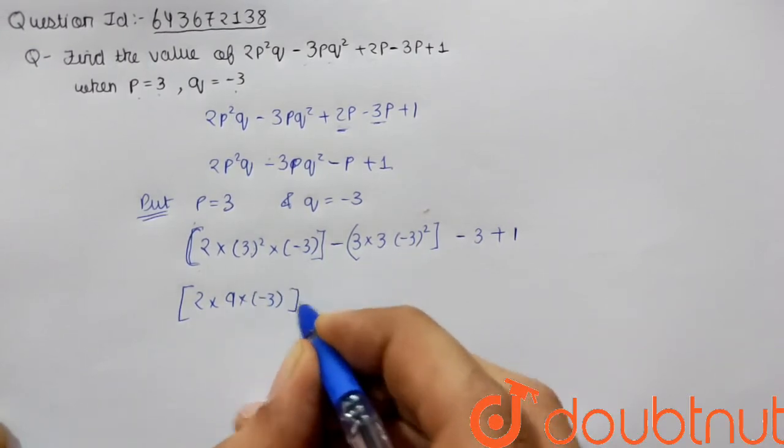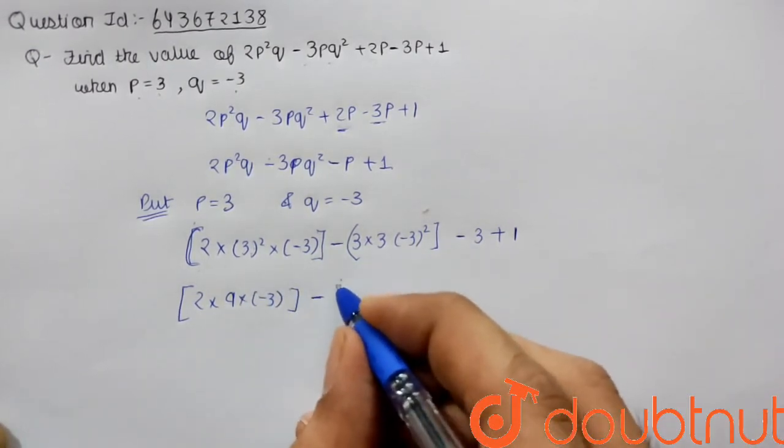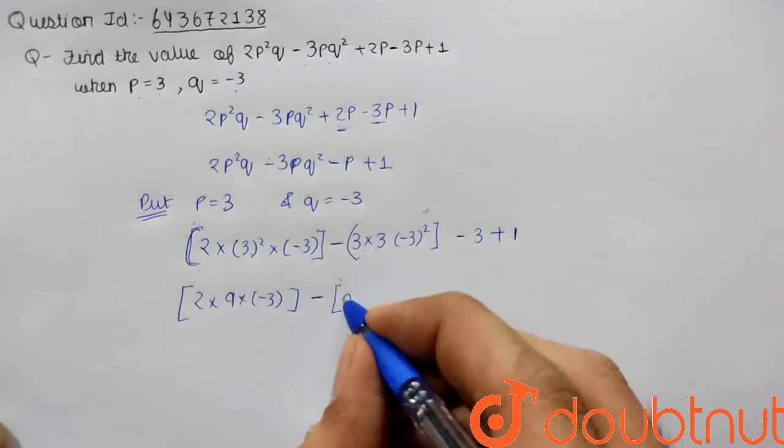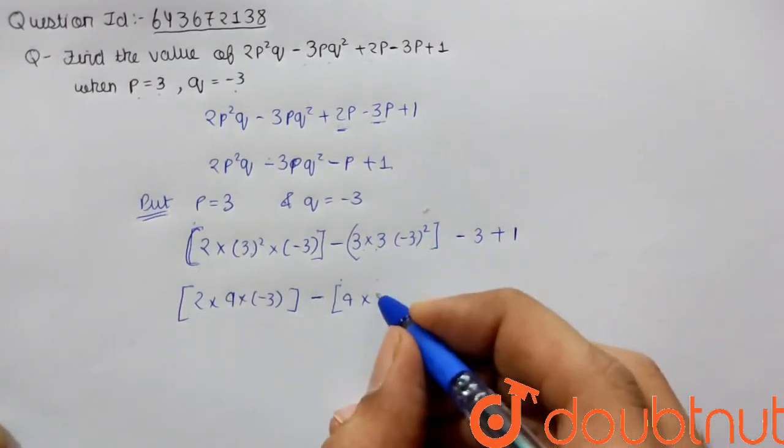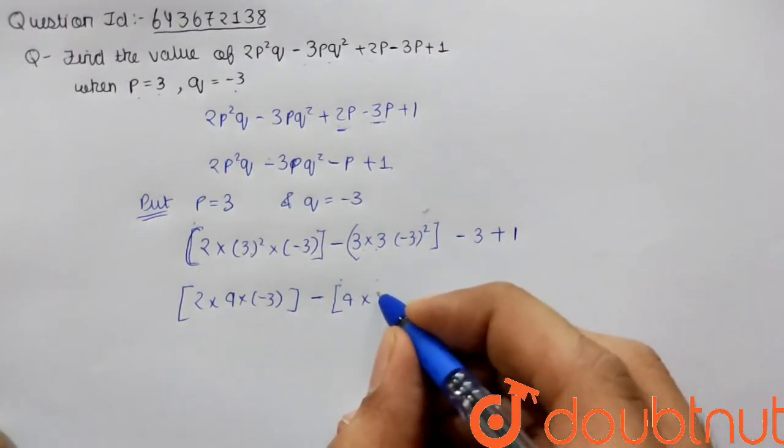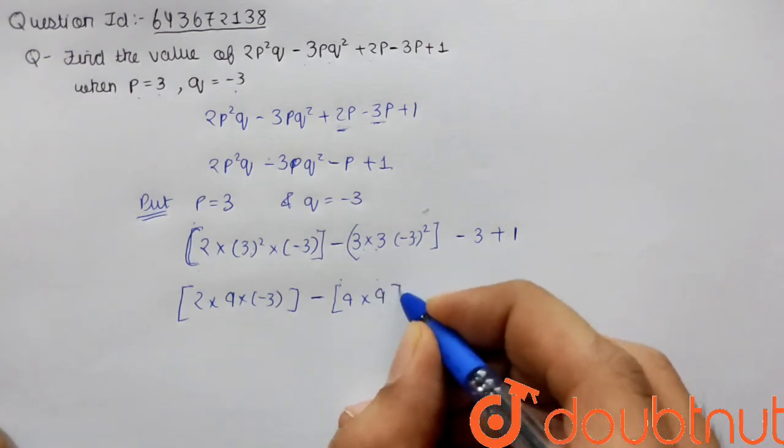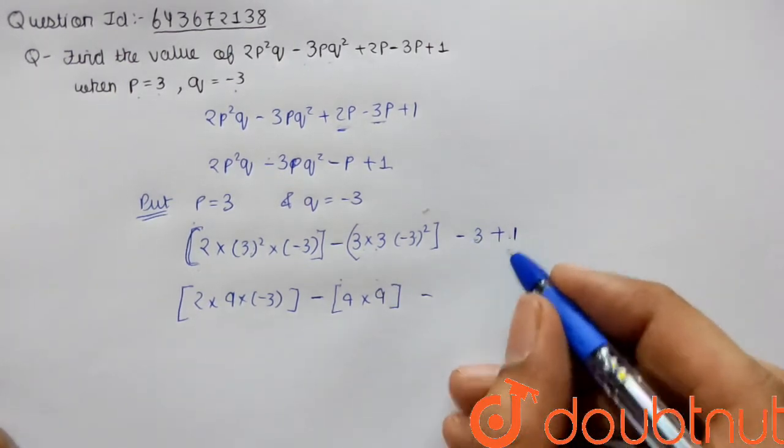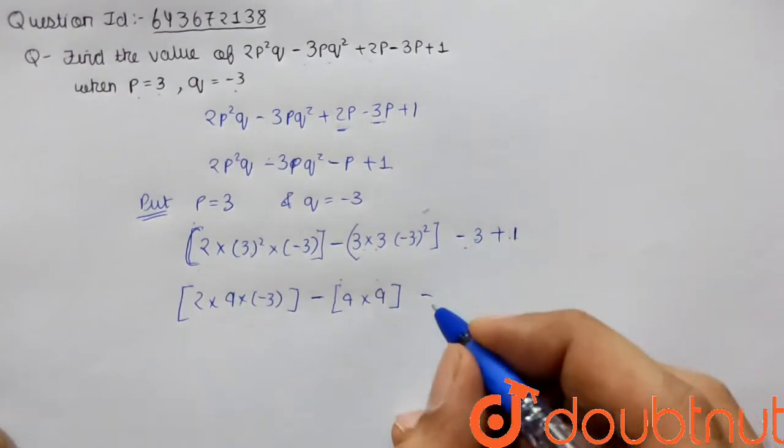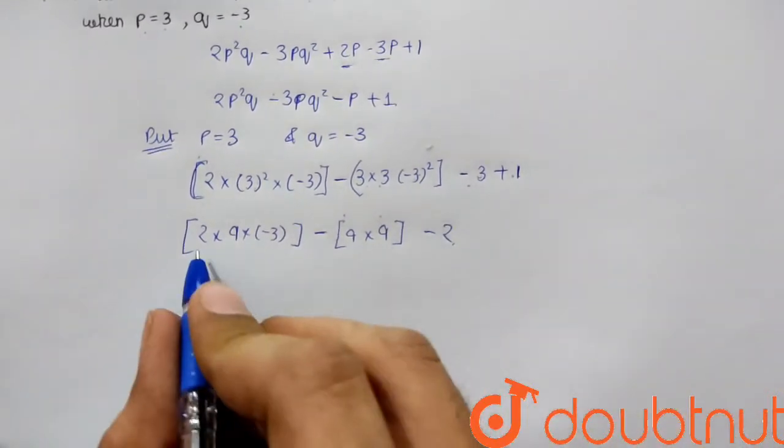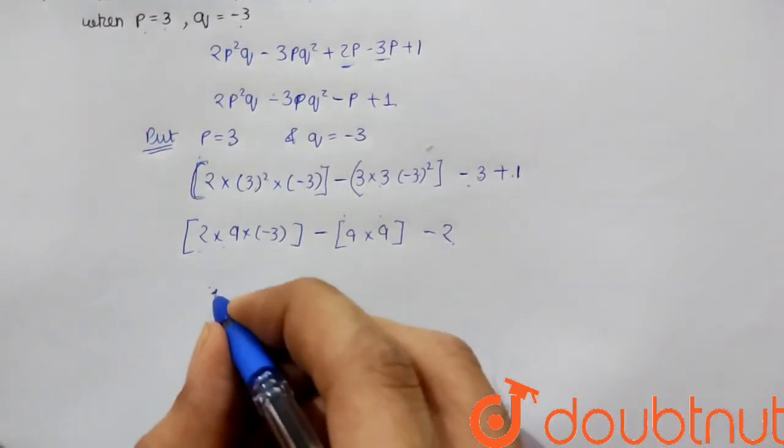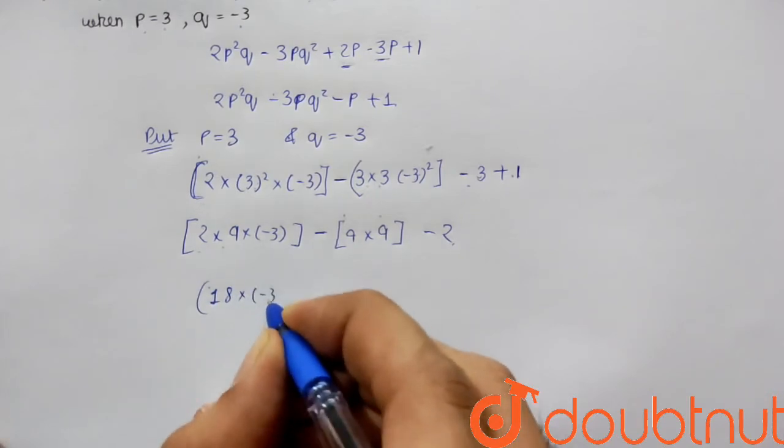Now let's solve: 2 × 9 × (-3), minus 3 × 3 × 9, minus 3 plus 1.